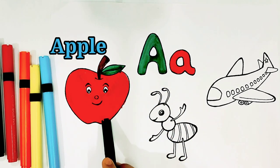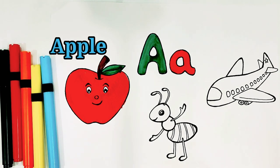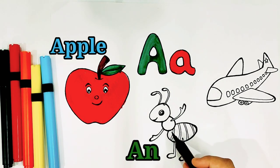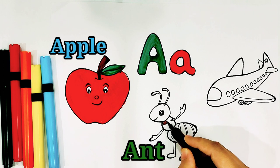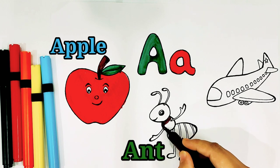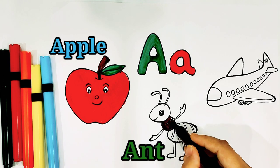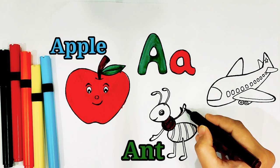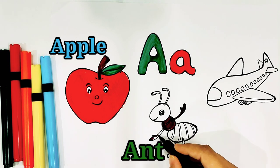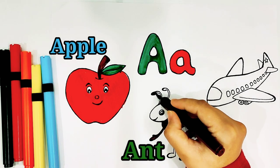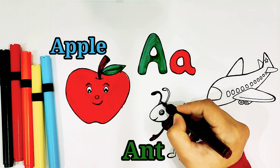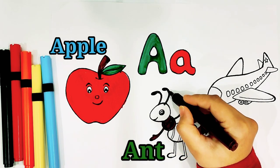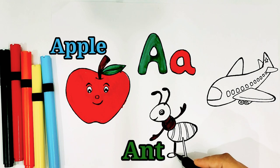A, B, C, D, E, F, G, H, I, J, K, L, M, N, O, P, Q, R, S, T, U, V, W, X, Y and Z. Now I know my ABCs, next time won't you sing with me?